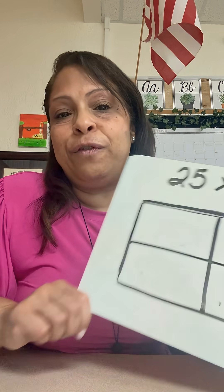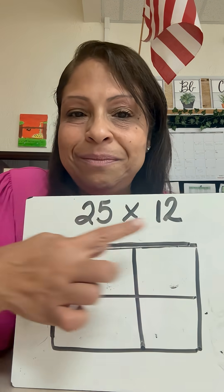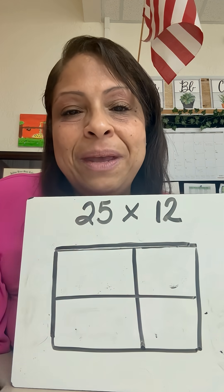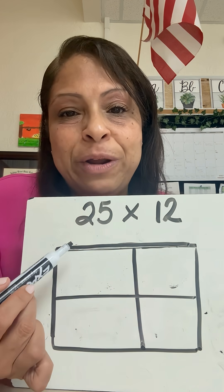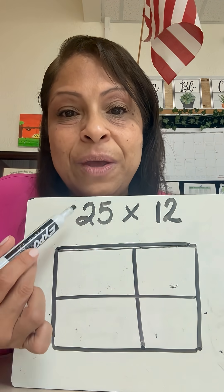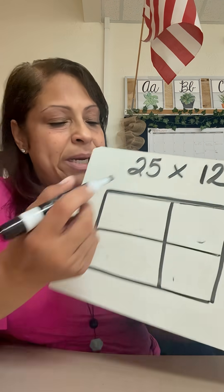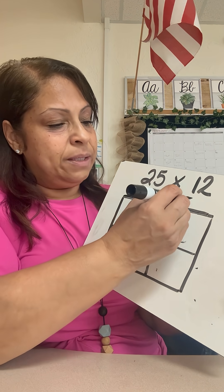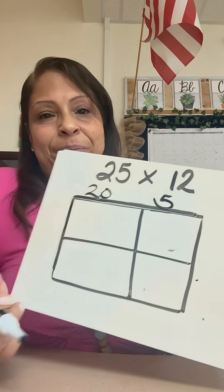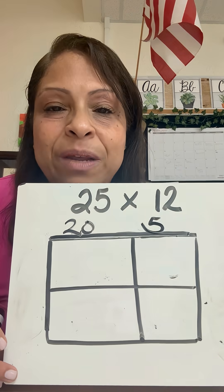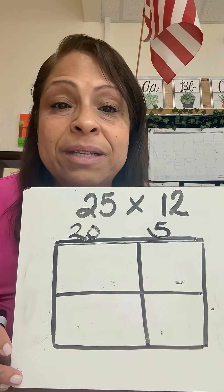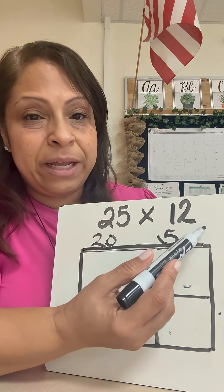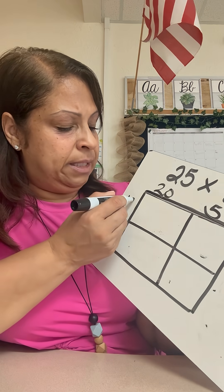It also reviews place value, so here's the example. First you draw yourself a box and you have your equation on top. I'm going to separate my 25 by place value, which is two tens, which makes 20, and five ones. I'll do the same for my next number — separating it by a 10 and two ones, because that makes 12.